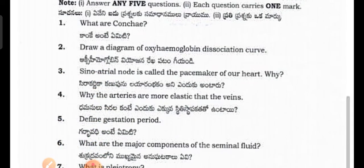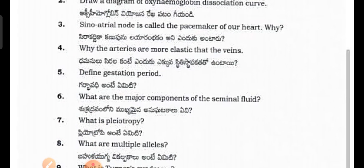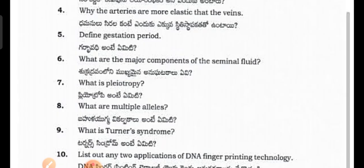Draw a diagram of the oxyhaemoglobin dissociation curve. (Oxyhaemoglobin weichna reka antae patamgi yandhi.) The sinoatrial node is called the pacemaker of the heart. (Sirak anir kanip nao layar ambi kanu yandhi.) Why are arteries more elastic than veins? (Daman lu sirila kandhi ekko indhuk sithi saapthakali yandhi.) What are the major components of the seminal fluid? (Shukra dravam loini muktu nanu kandhi.)